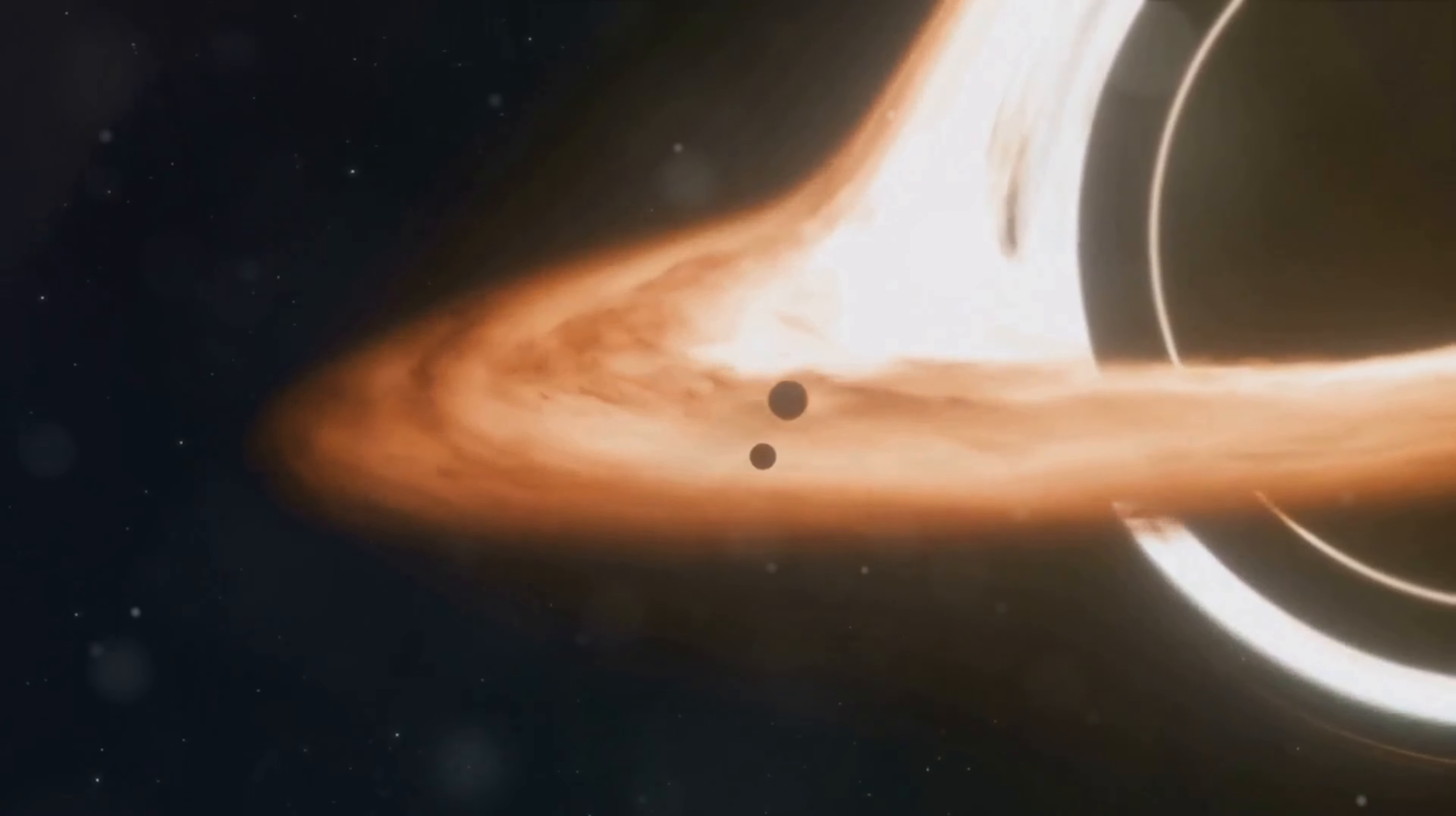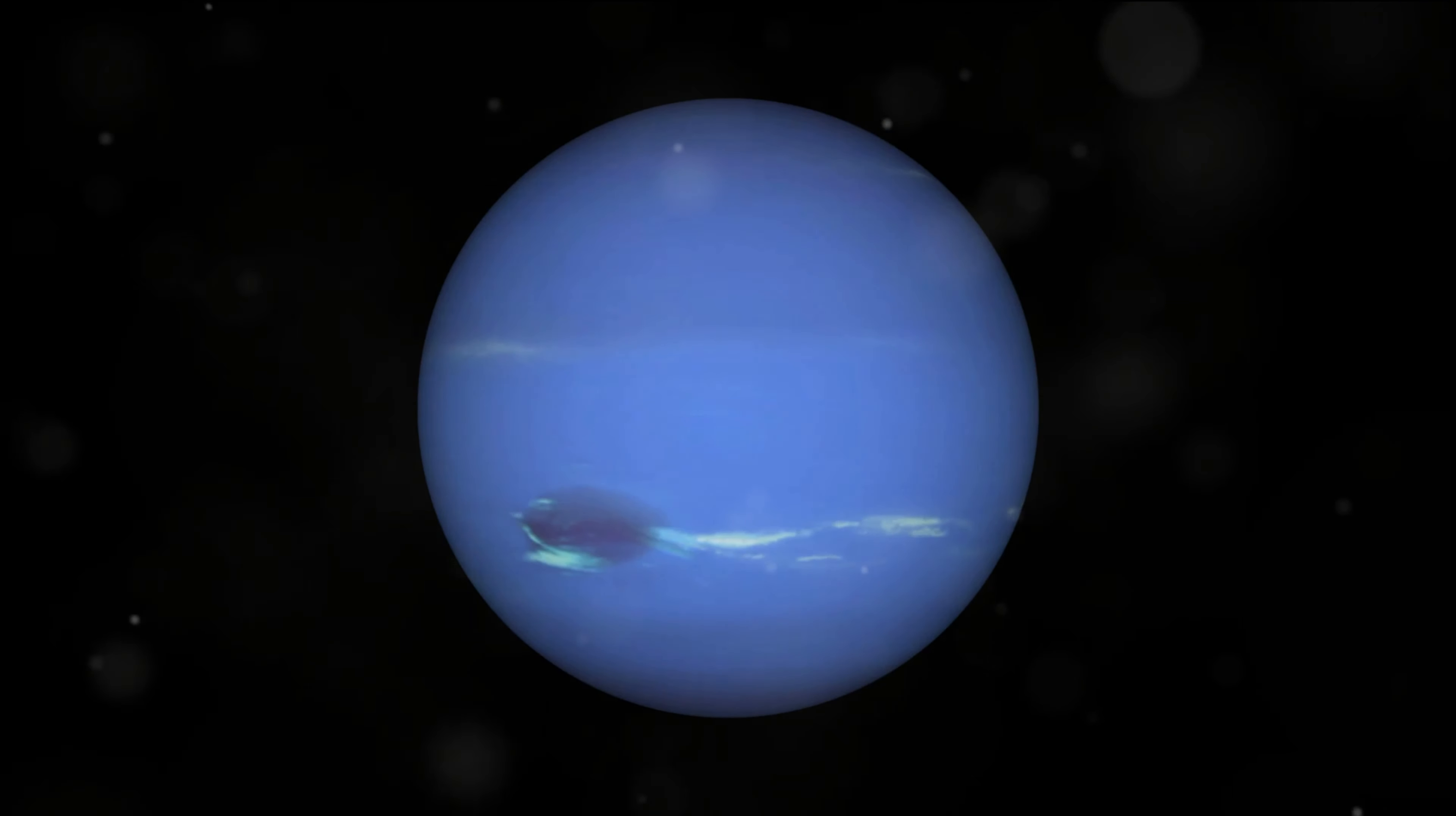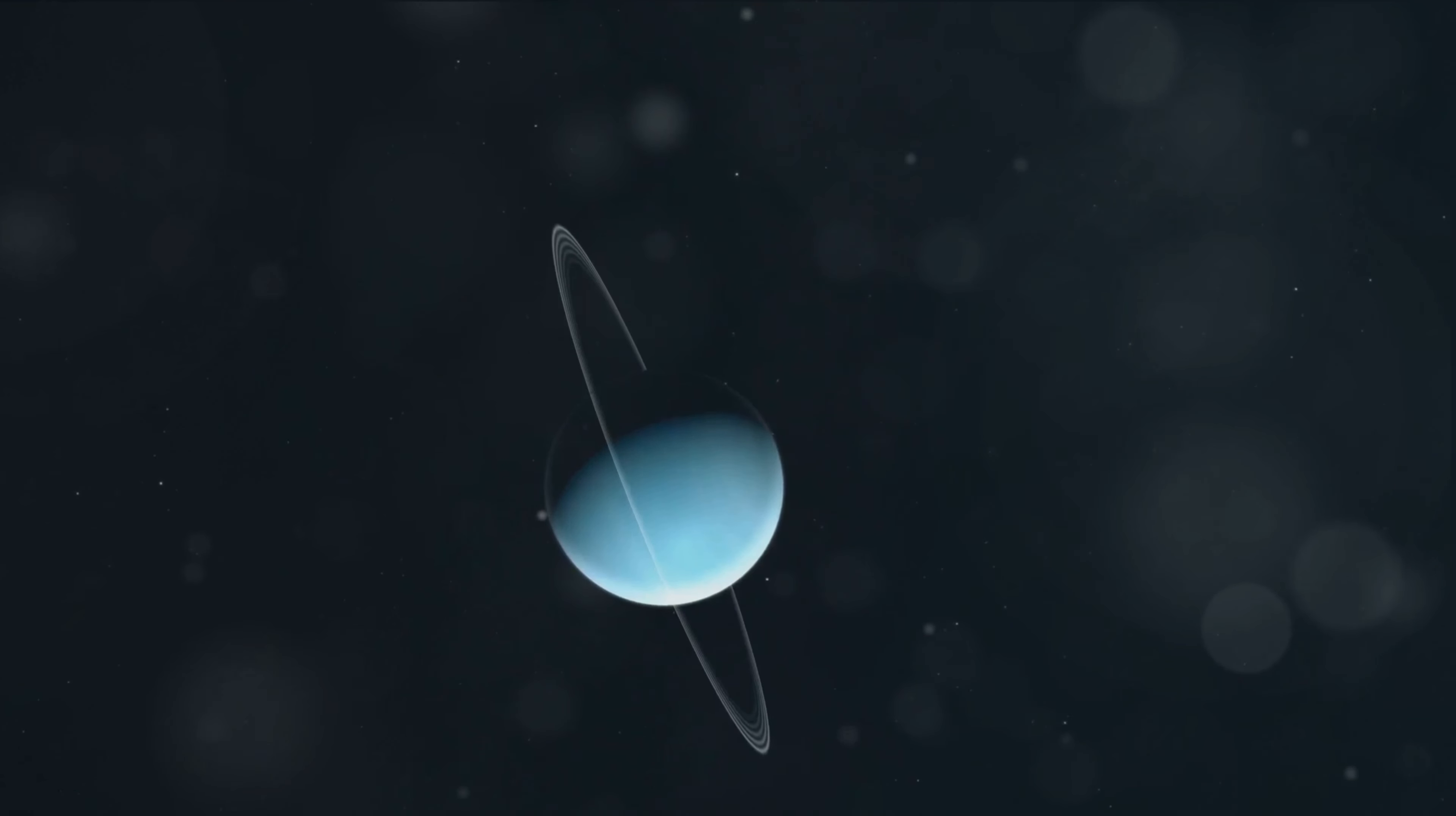Such disruptions in the expected cosmic order have historically prompted the search for new planets, a tradition tracing back to Neptune's discovery in the 19th century, similarly predicted through mathematical irregularities in Uranus's orbit.